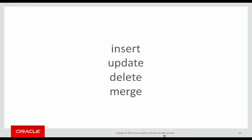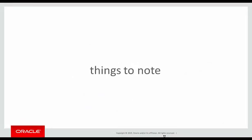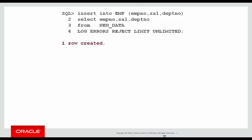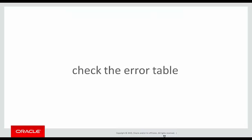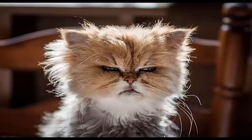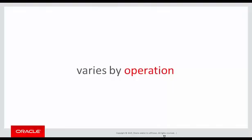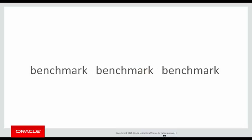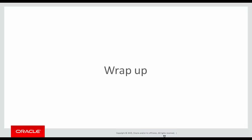DML error logging can be used for all the data modification statements, but there are a couple of things to note. Firstly, when you use DML error logging, even if there are bad rows, no error is raised — you will need to check the error table to see if some rows were rejected. The second thing is performance. Commands with DML error logging are typically a little slower than not using it at all. That is the compromise you accept for not losing six hours of loading time with no results. The performance impact varies by operation — whether you're doing an insert, update, delete, or merge — and also by the version of the database you're using, so make sure you're on a current version. Most importantly, benchmark the facility before slamming it into your production environment.